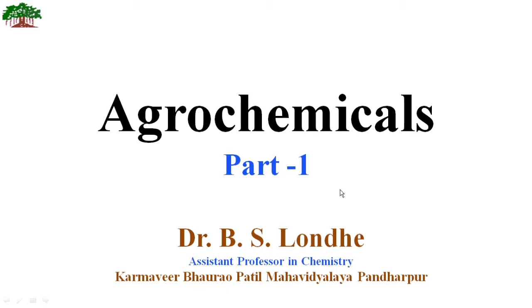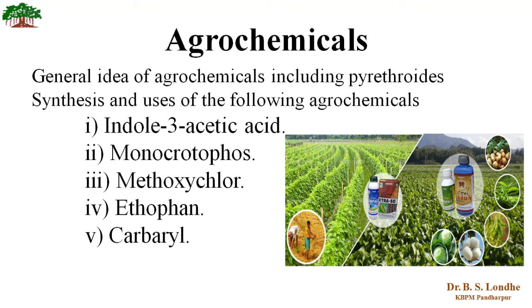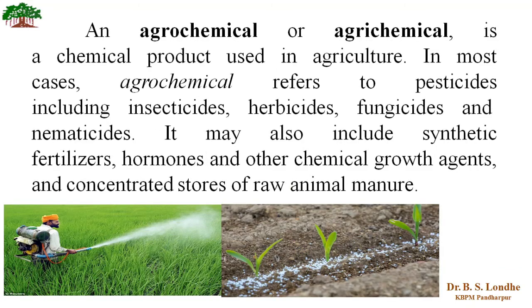Today we are going to see part first of the Agrochemicals chapter. This chapter is for sixth semester B.Sc. third year. The content of the chapter includes a general idea of agrochemicals including pyrethroids, and synthesis as well as images of agrochemicals namely Indole-3-acetic acid, Monocrotophos, Methoxychlor, Ethephon, and Carbaryl.